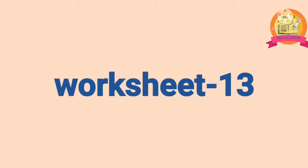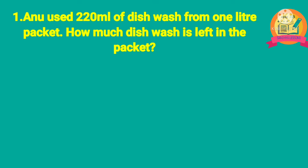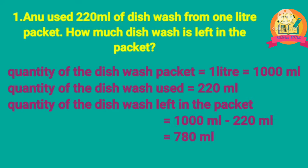Worksheet 13. First problem: Anu used 220 ml of dishwash from a 1 liter packet. How much dishwash is left in the packet? Solution: quantity of the dishwash packet is 1 liter, which equals 1000 ml. Quantity of dishwash used is 220 ml. Quantity left is 1000 ml minus 220 ml. After subtraction, we get 780 ml. Therefore, quantity of dishwash left in the packet is equal to 780 ml.